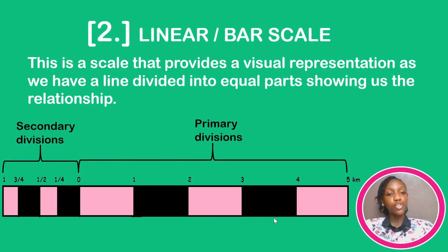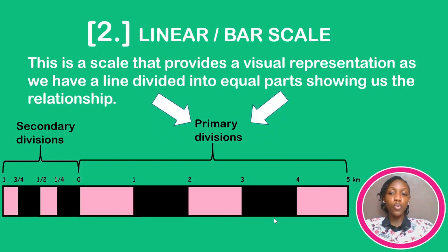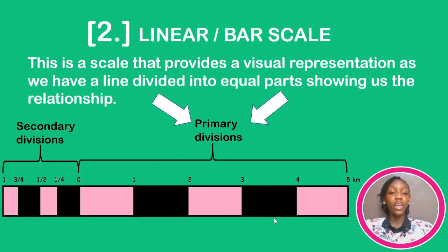This is an example of a linear scale. We have the primary division — that's the part after the zero — and the secondary division. The primary division is the only one you need to be concerned about at this stage, so ignore everything before the zero. Even in your exam examples, you are not going to see the secondary parts. You may only see that in your practical map, but even still, you don't need to focus on the secondary division.